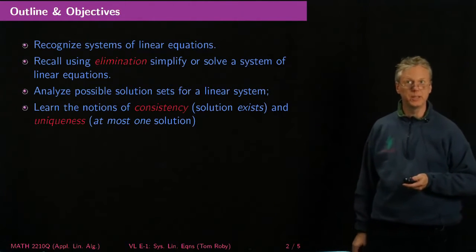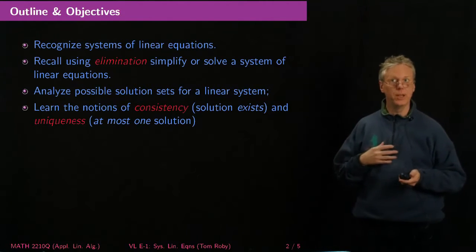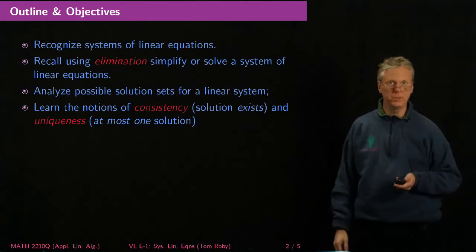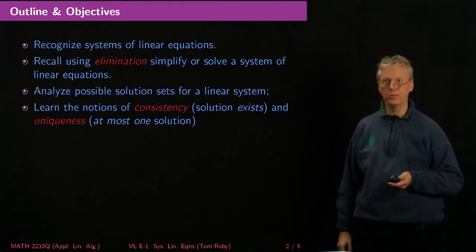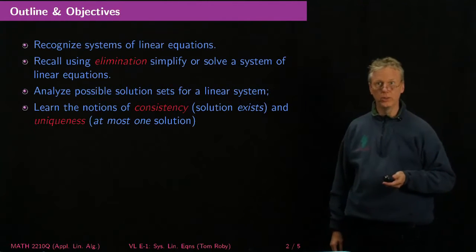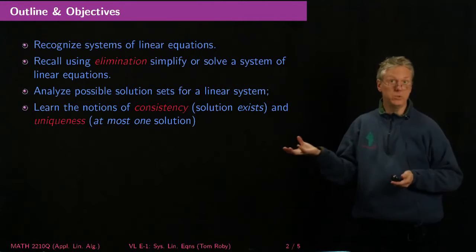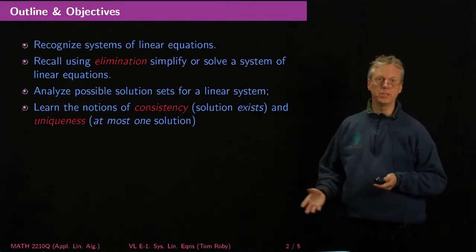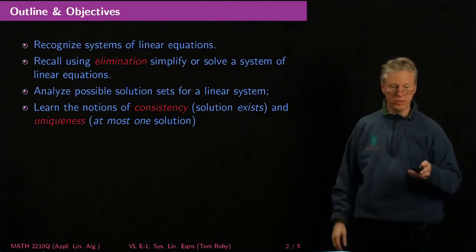By the end of this video lecture you should be able to recognize systems of linear equations. I want you to recall how we used to use elimination to simplify or solve a system of linear equations, probably you did this in high school. We'll analyze what the possible solution sets for a linear system are. We'll learn the notions of consistency, which means that at least one solution exists, and uniqueness, meaning that at most one solution exists. So some systems of linear equations will have one unique solution, but some will have more than one solution, and some will have no solutions at all.